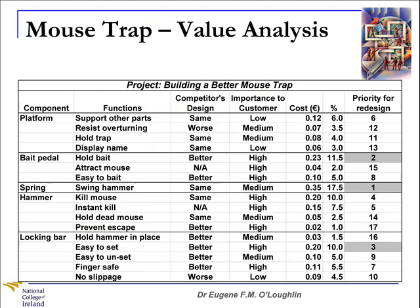In my table, I have my five components listed down along the left-hand side, and in the next column I have several functions associated with each component. For example, the platform has four functions: support other parts, resist overturning, hold the trap, and display the manufacturer's name. We look at each component and list the functions associated with it.